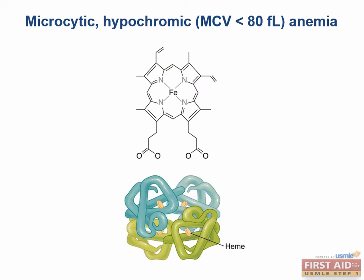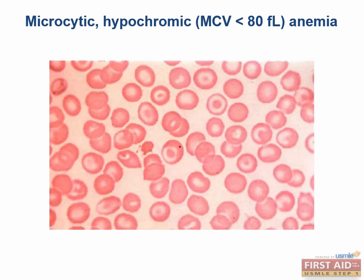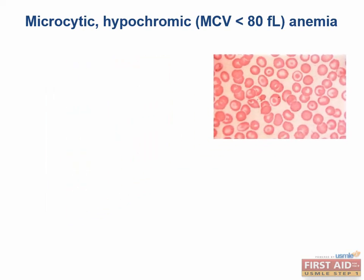The thalassemias can also cause microcytic anemia, but instead of heme problems, these patients have mutations in the globin subunits. Target cells appear on peripheral smear. Alpha-thalassemia is a defect in the alpha-globin gene, and there are normally four copies — two from mom and two from dad. The severity of disease is directly proportional to the number of mutated genes. One to two mutated genes gives a relatively normal phenotype with no anemia, because there are still enough alpha units to form sufficient hemoglobin A, and hemoglobin electrophoresis will be normal.